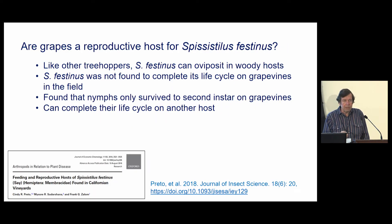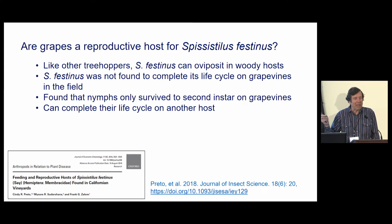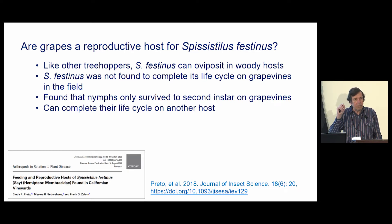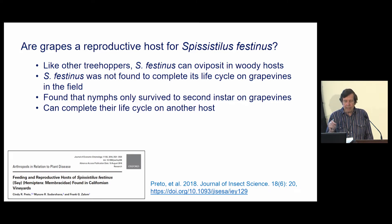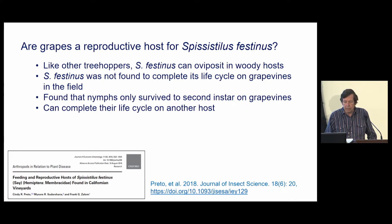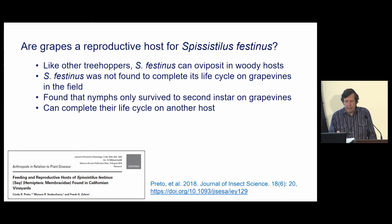Are grapevines reproductive hosts for Spissistilus? Like other treehoppers, the common name has a lot to do with explaining the biology — treehoppers basically feed on trees or woody plants, and they oviposit on woody hosts. In many cases treehoppers can't complete their life cycle on these woody hosts, so they leave and feed on legumes in the vicinity, complete their life cycle there, and then move as adults back onto an ovipositional host. This is the case with Spissistilus festinus as well, although it can also complete its life cycle on legume hosts.